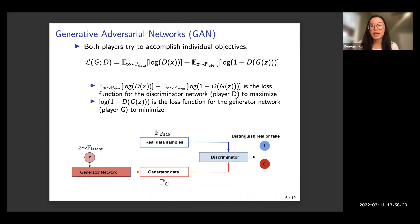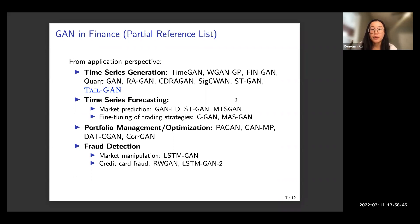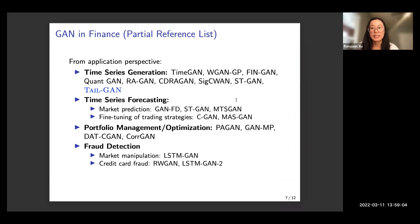Originally, this framework was designed to generate images, but later it has been applied in the financial domain. From an application perspective, we can modify or improve the GAN architecture to help generate time series or forecast time series. It can also be combined with downstream tasks such as portfolio optimization and fraud detection on credit markets — it is a very flexible machine learning framework.